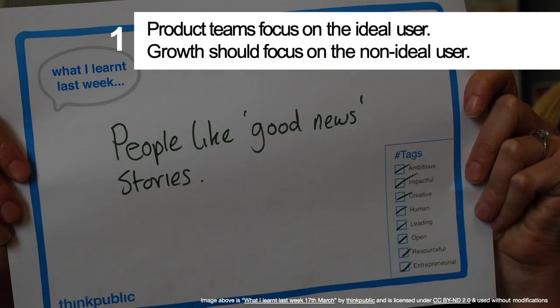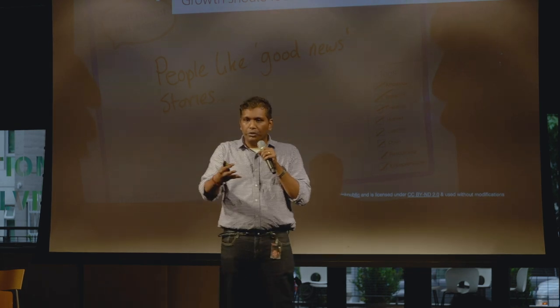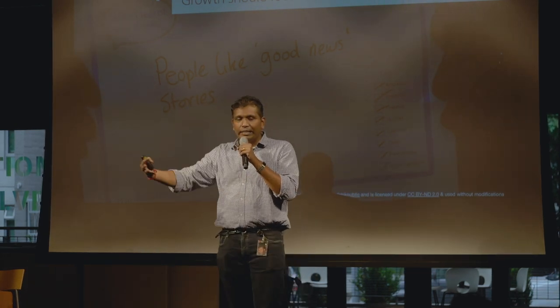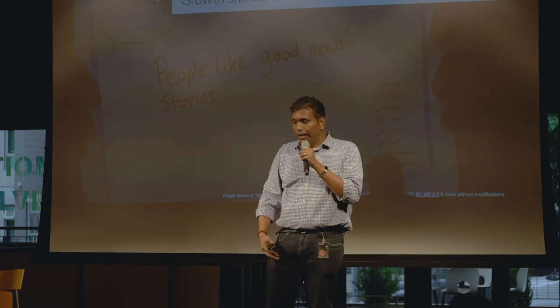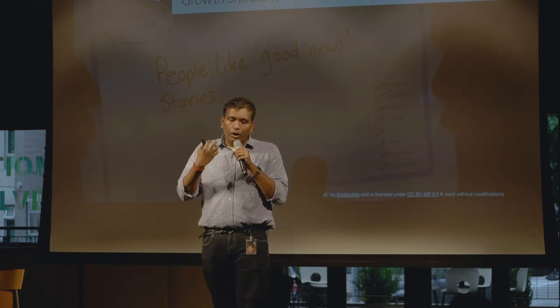Here's the first learning: product teams focus on the ideal user. I learned this early in my evangelism days — I would go talk to users, take their feedback, and send it to the teams. Some feedback was getting heard, something else wasn't. What I realized is product teams are creating for that ideal user — somebody who just looks at the product and gets it. The growth team should focus on the user who's not that ideal, but is still the actual target user for you.